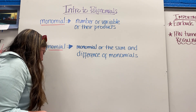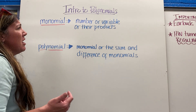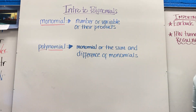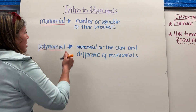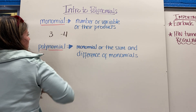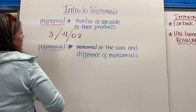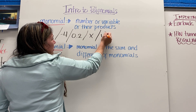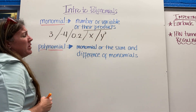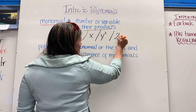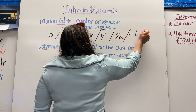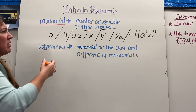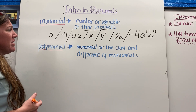Before we talk about polynomials, we need to know what a monomial is. A monomial is a number, a variable, or their products. A number is like 3, negative 4, or 0.2. It could be a variable — x, or y to the third. Or their products, when a variable and a number are multiplied — like 2a, or negative 4a to the eighth b to the fourth.